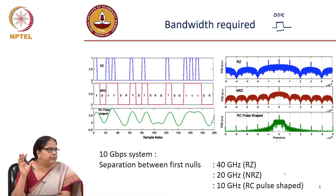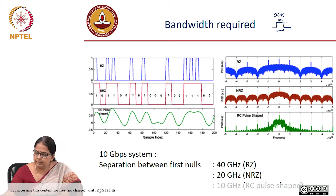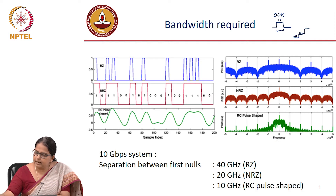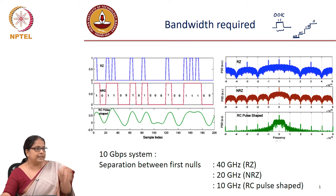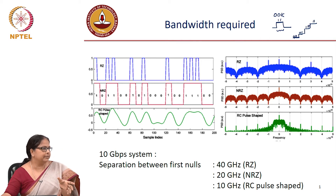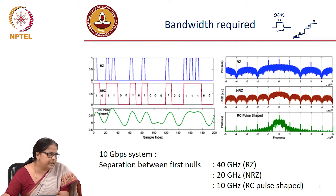Whereas in PAM4, for instance, each of these levels represents either a 1-0 or maybe a 1-1. In PAM4 you have a 0-0 level, then maybe a 0-1 level, then maybe a 1-1 level, then maybe a 1-0 level. So each symbol transition represents actually 2 bits, which means bit rate is different from symbol rate there.